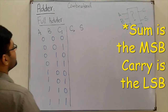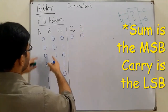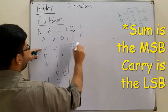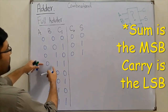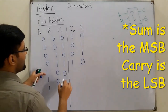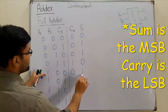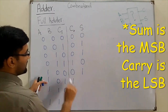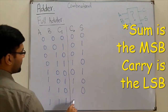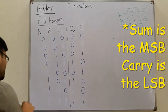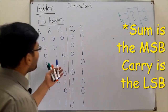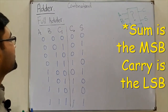Filling the truth table: 0+0+0 gives carry=0, sum=0; 0+0+1 gives carry=0, sum=1; 0+1+1 gives carry=1, sum=0; 1+0+0 gives carry=0, sum=1; 1+0+1 gives carry=1, sum=0; 1+1+0 gives carry=1, sum=0; 1+1+1 gives carry=1, sum=1. Watch the binary addition videos if this is unclear.